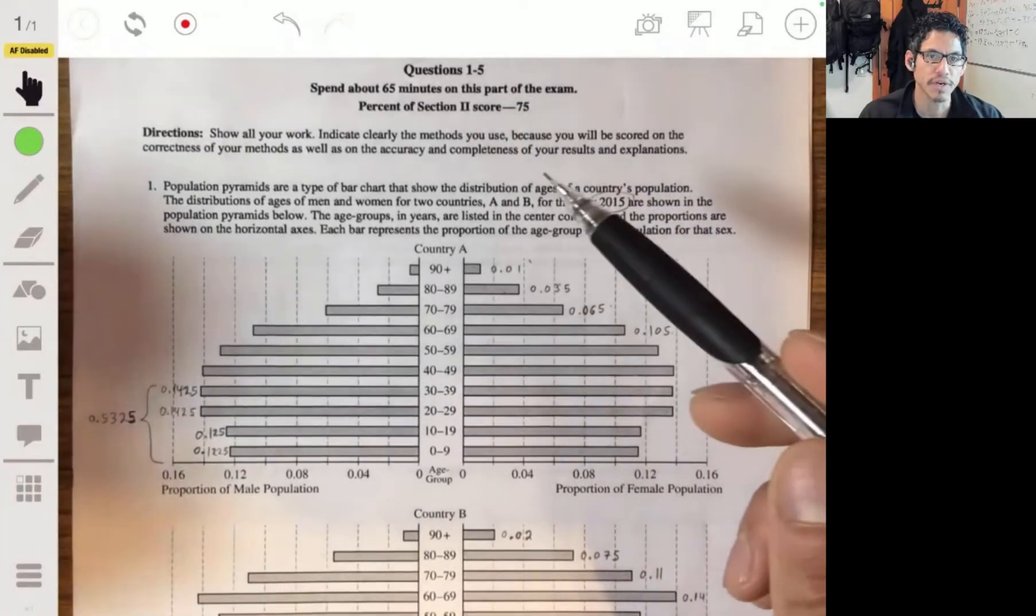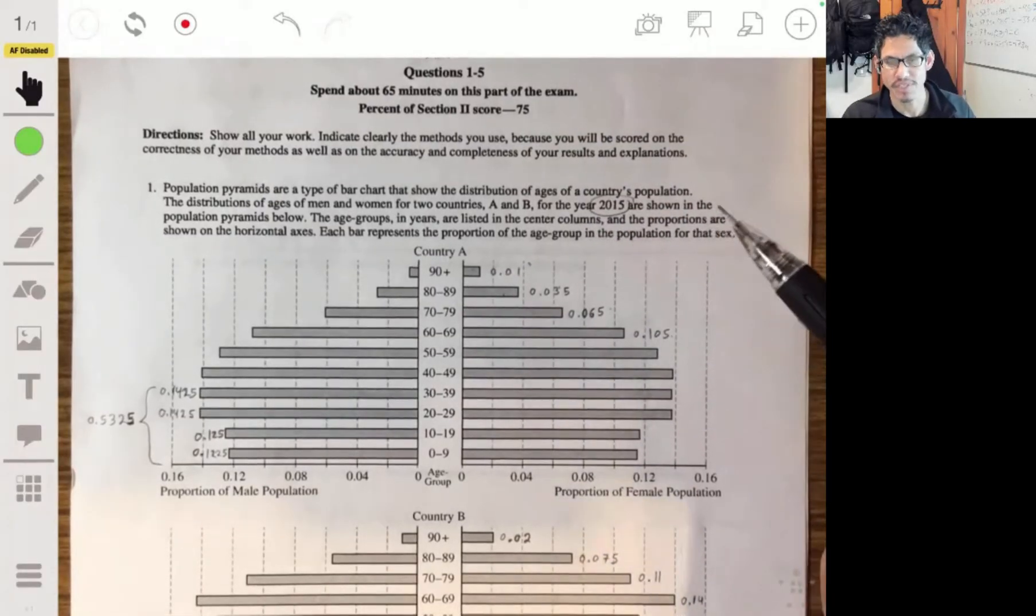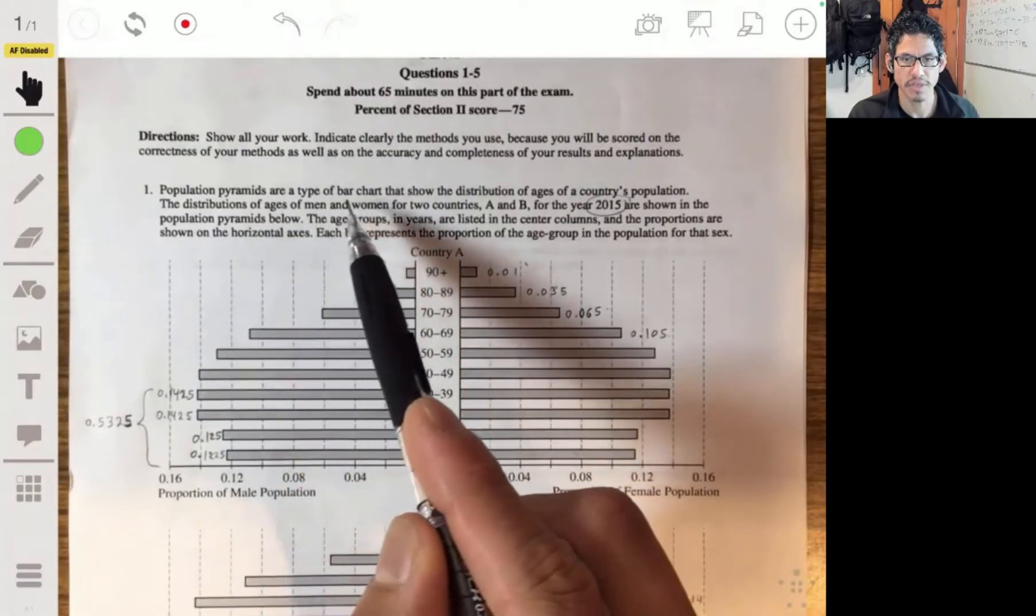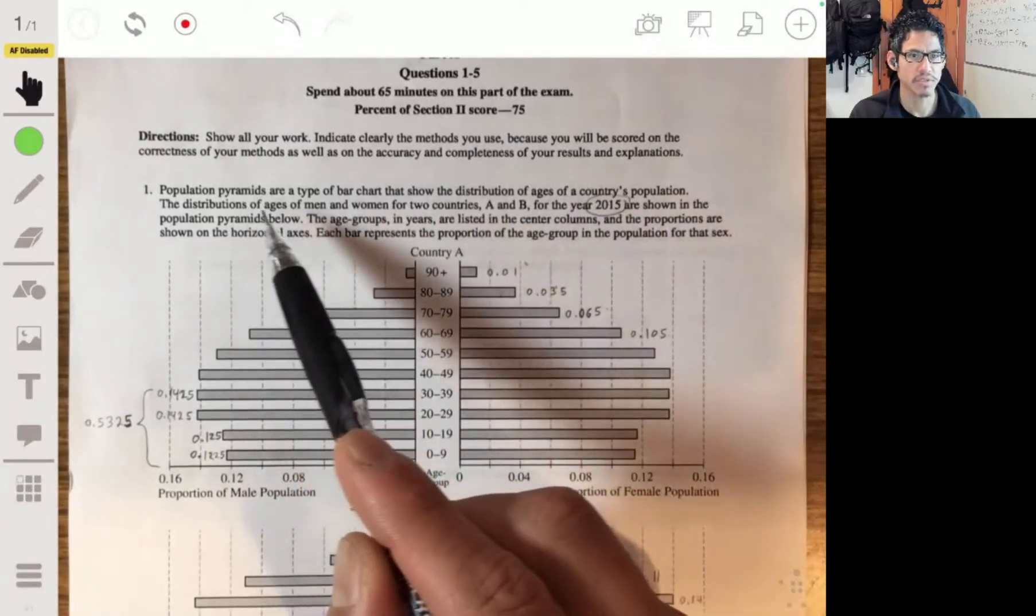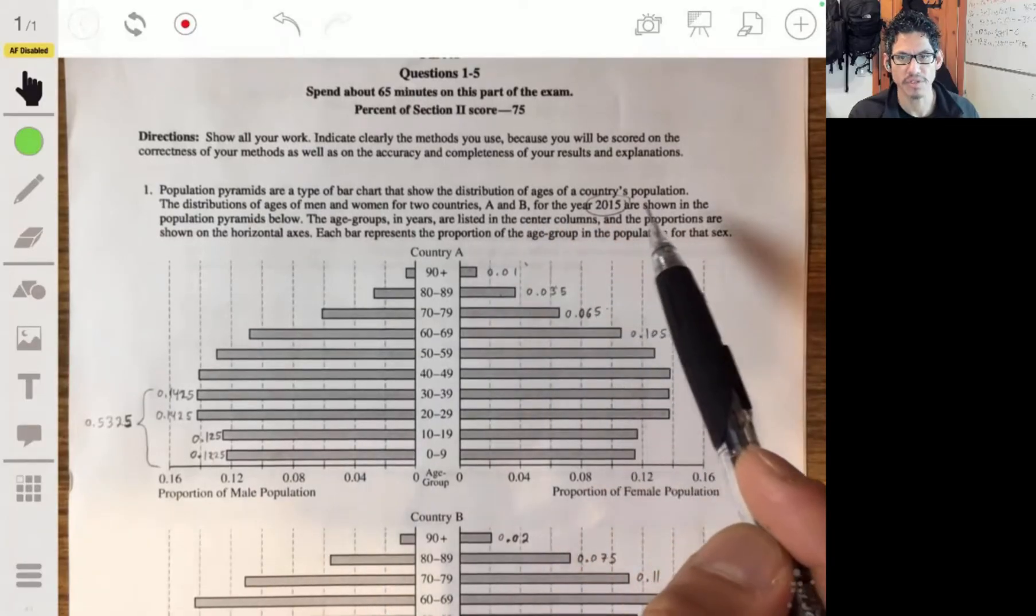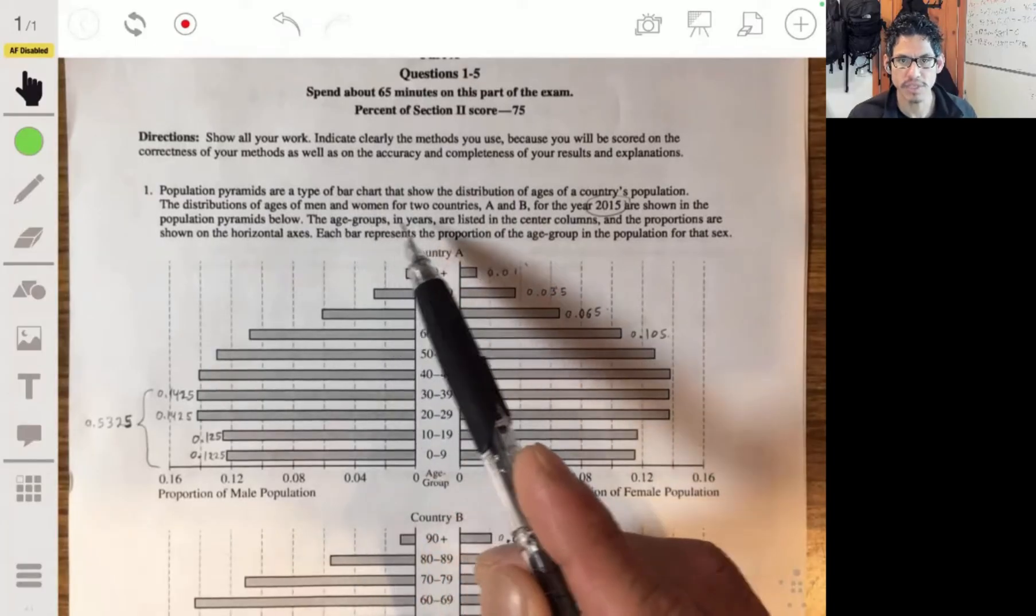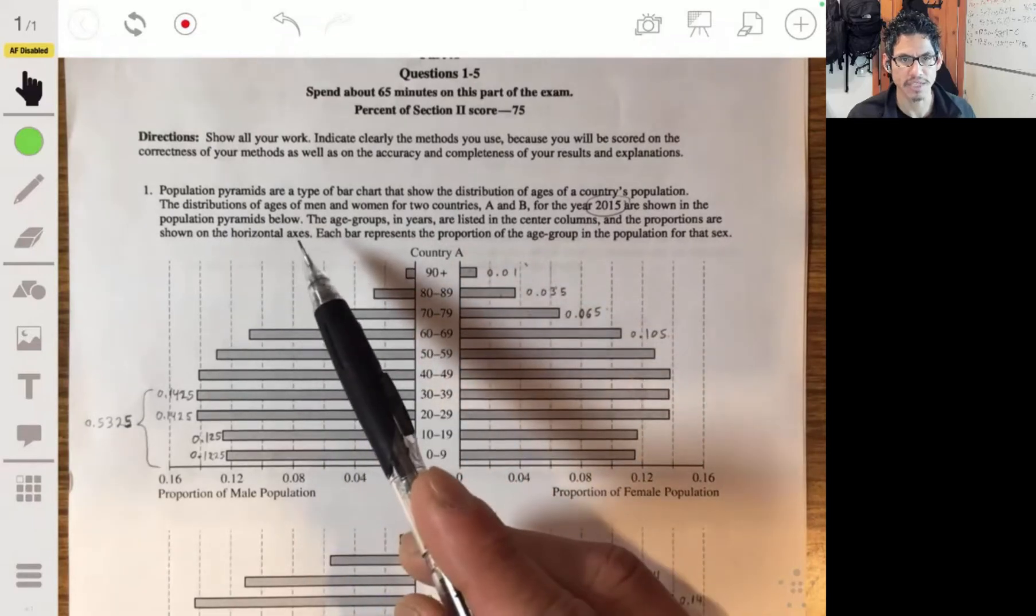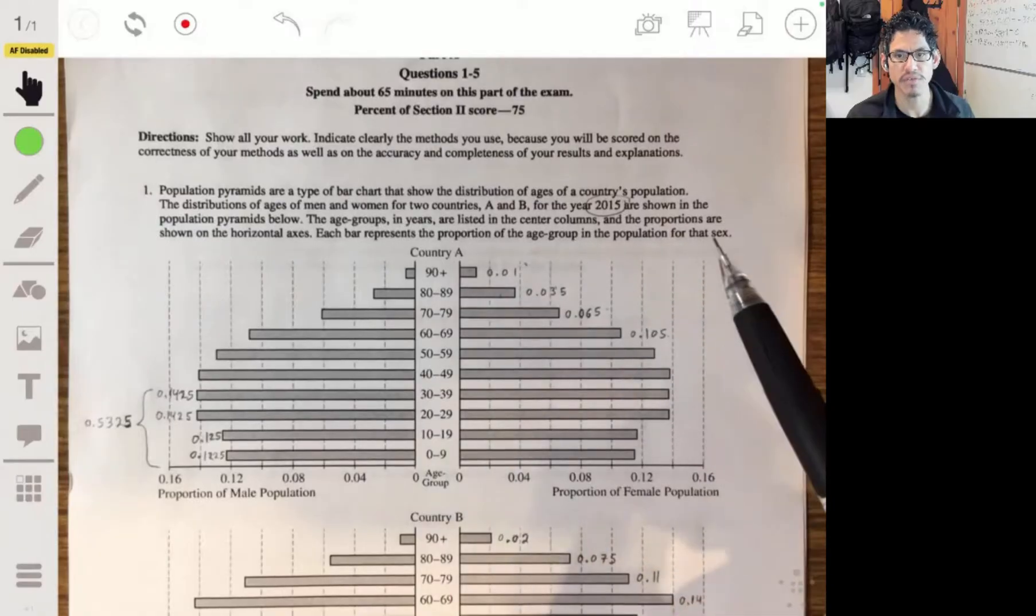Alright, going over free response problem one from the AP Statistics 2017 exam. It says that population pyramids are a type of bar chart that show the distribution of ages of a country's population. Distributions of ages of men and women for two countries A and B for the year 2015 are shown in the population pyramids below. The age groups in years are listed in the center columns, and the proportions are shown on the horizontal axis.